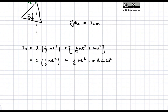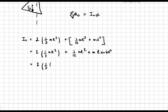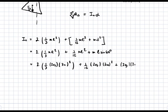Plugging everything in: two times one-third times two kilograms times three meters squared, plus one-twelfth times two kilograms times three meters squared, plus two kilograms times three meters times sine of 60 degrees, all squared. Therefore, we get the final answer that I₀ is equal to 27 kilogram meters squared.